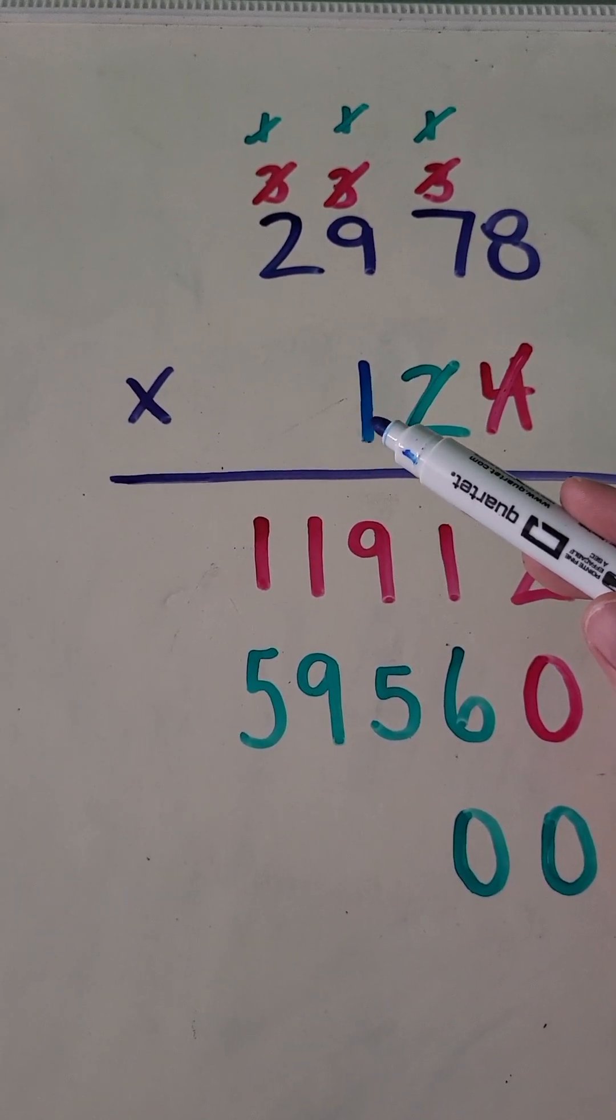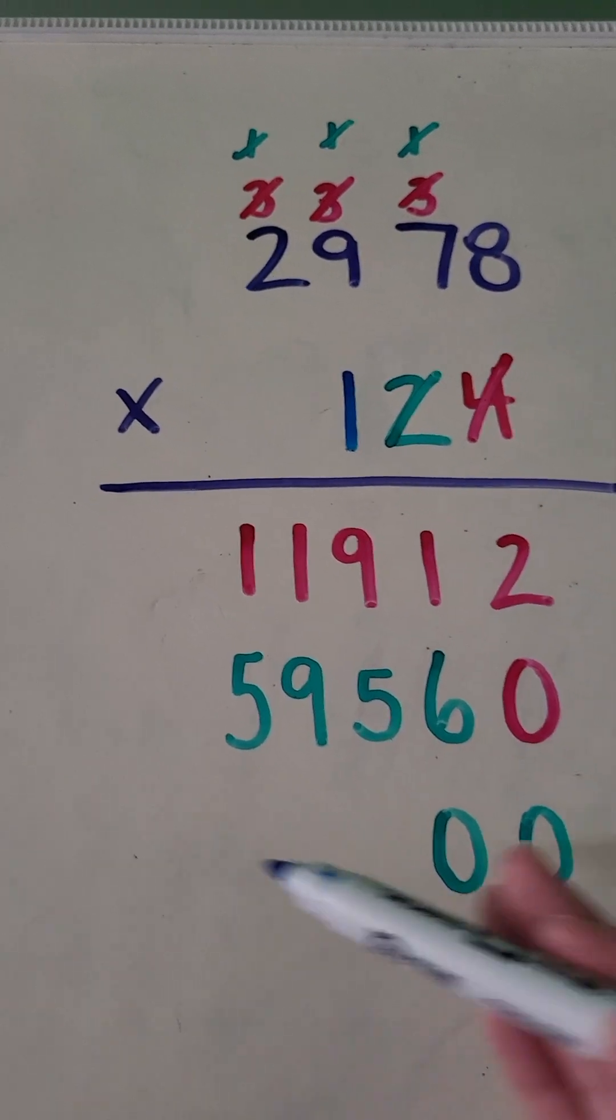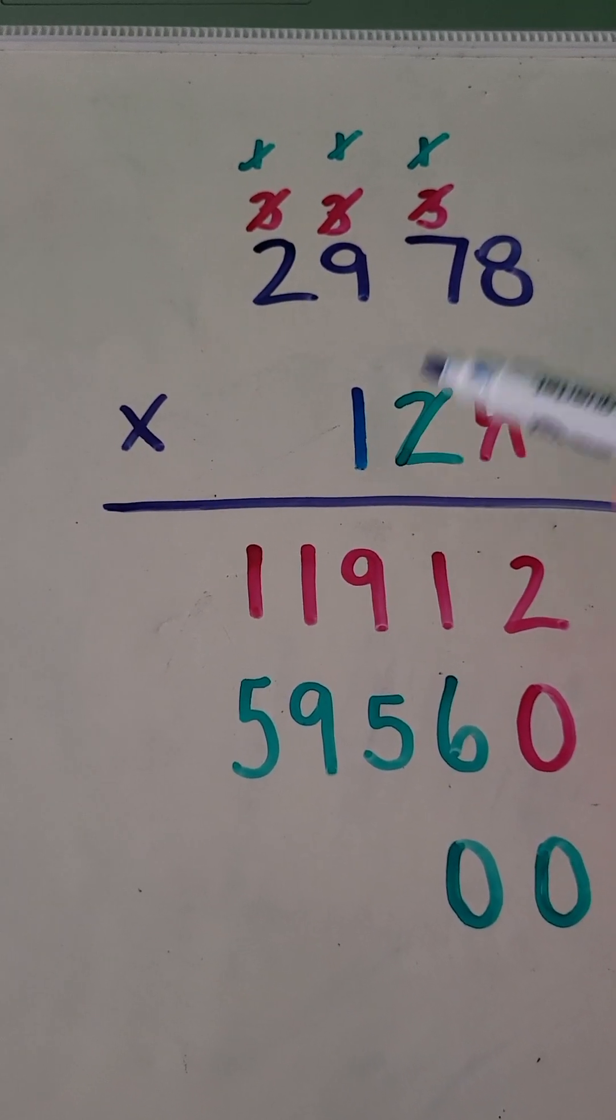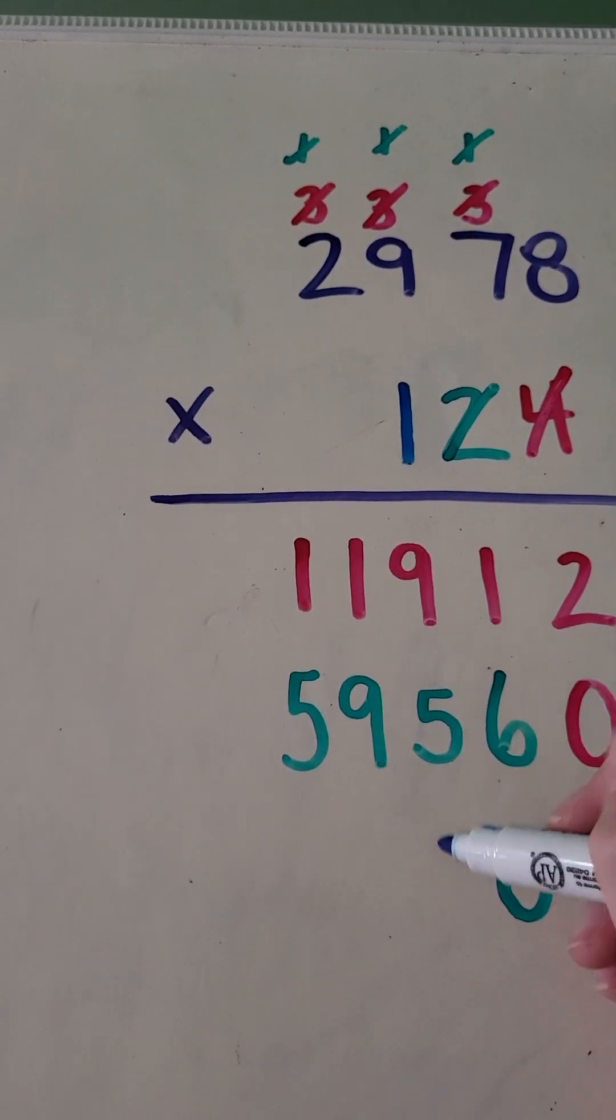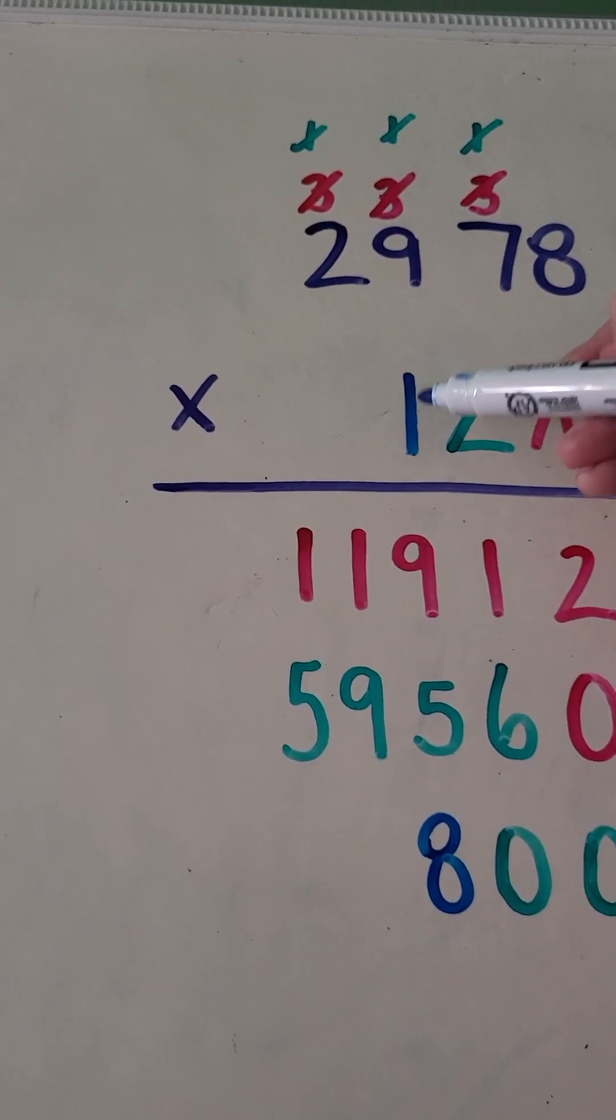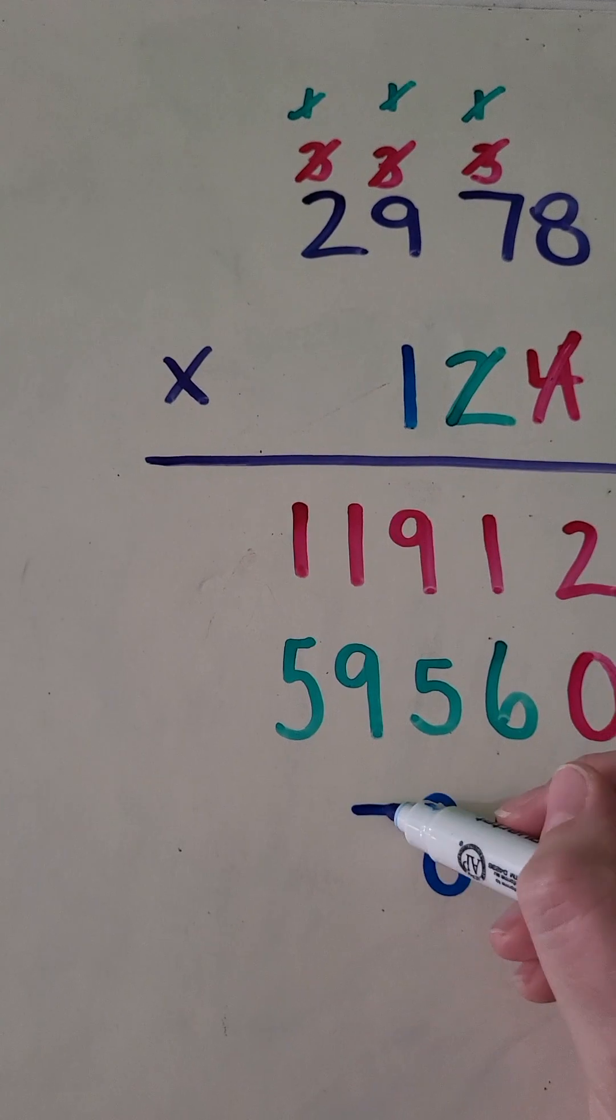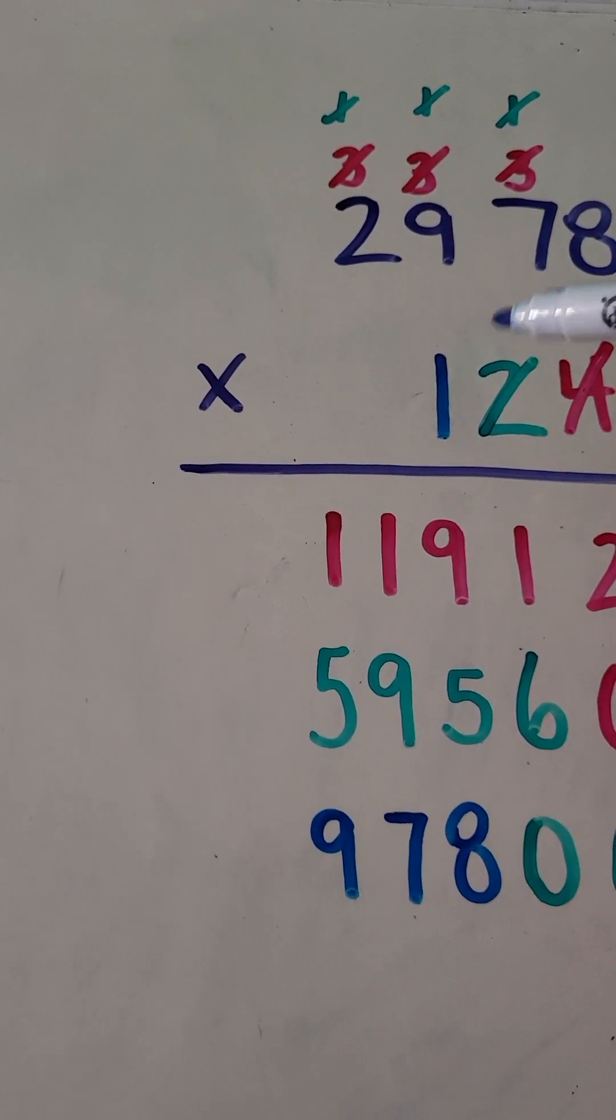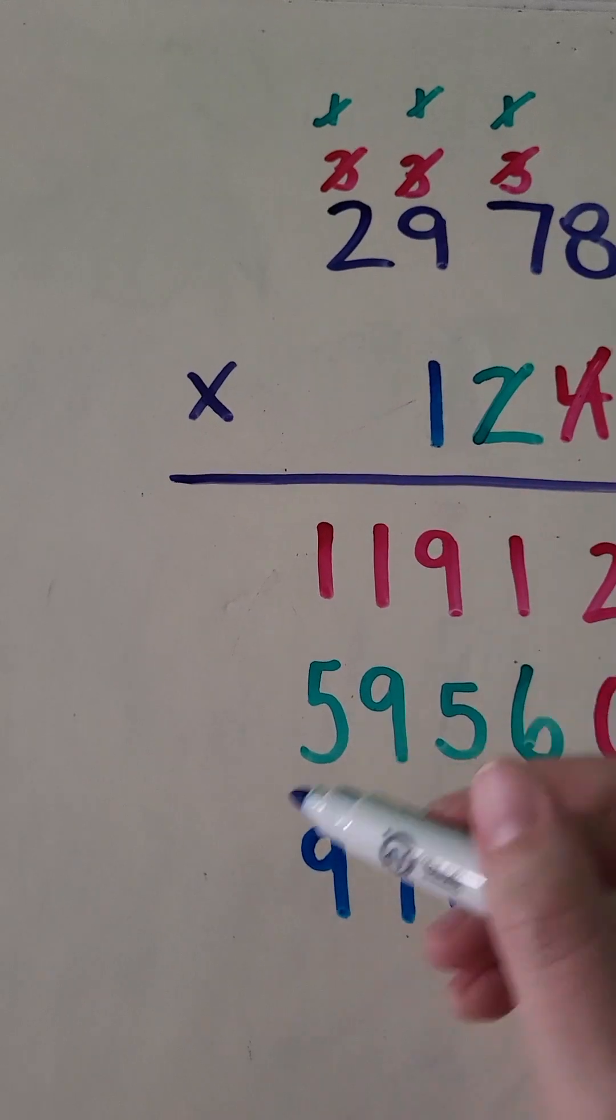So I'm going to do the same thing as I usually do. My multiplication, everything has been pushed over here because I'm working with the one in the hundreds place. 1 times 8 is 8, 1 times 7, 7, 1 times 9, 9, and 1 times 2, 2.